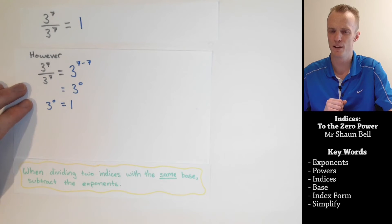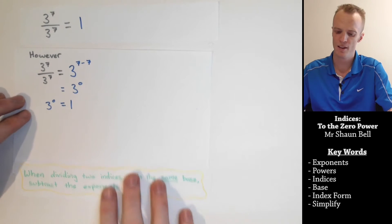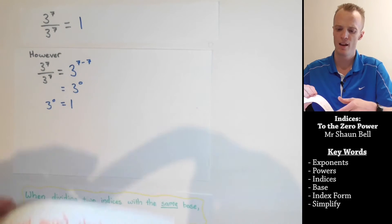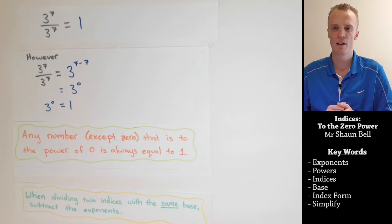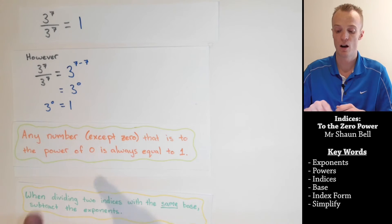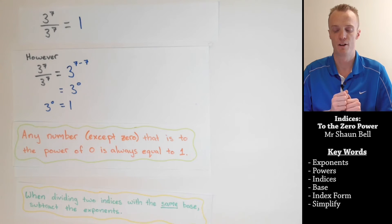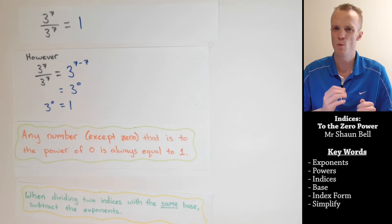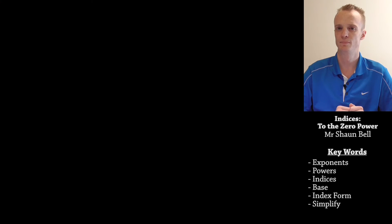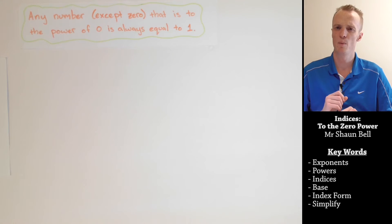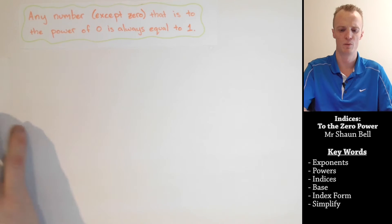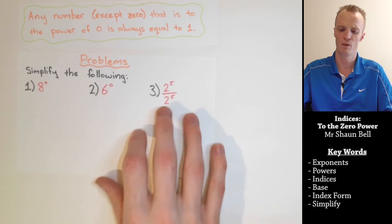I see a pattern developing here, and that's where our rule comes from: any number except for zero that is to the power of zero is always equal to one. This rule does seem to work, so let's now apply it to a few problems.